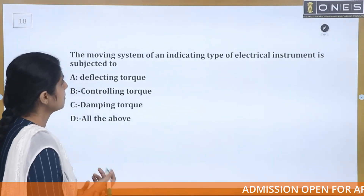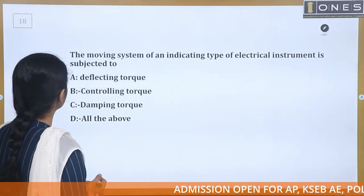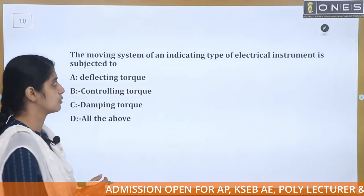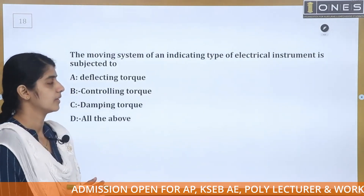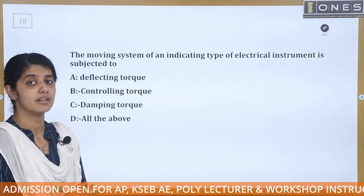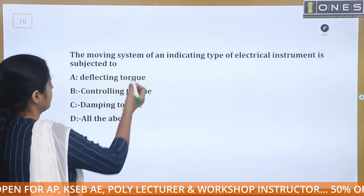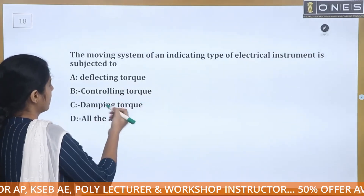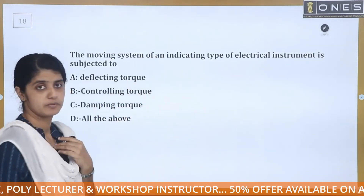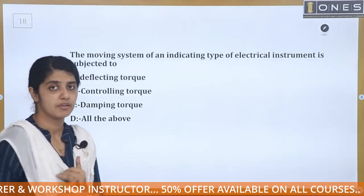The moving system of an indicating type of electrical instrument is subjected to: deflecting torque, controlling torque, damping torque, or all of the above? The answer is deflecting torque — let's explain.